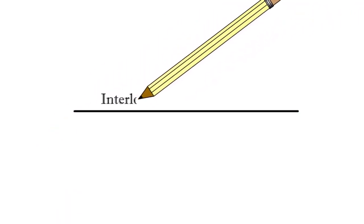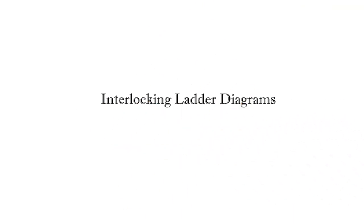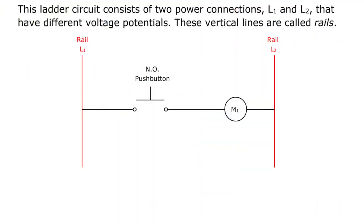Welcome to Interlocking Ladder Diagrams. The ladder circuit consists of two power connections, L1 and L2, that have different voltage potentials. These vertical lines are called rails.